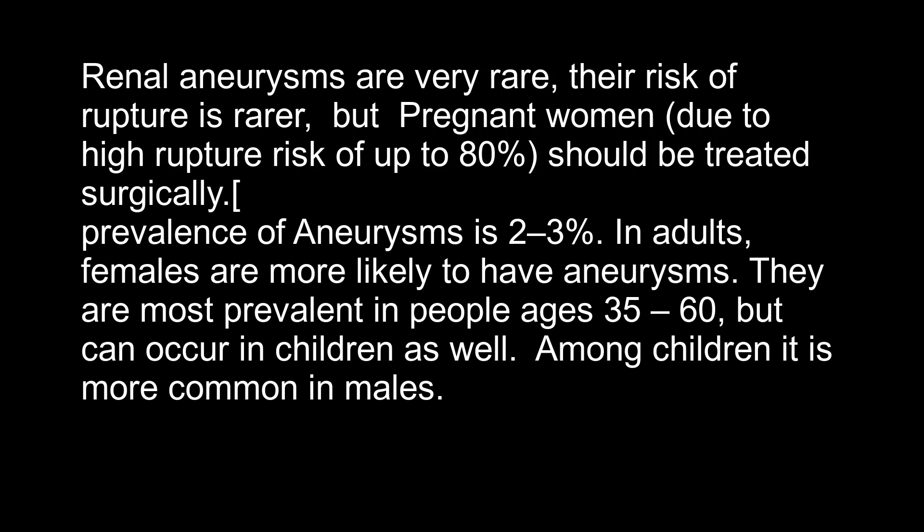The prevalence of aneurysm is two to three percent in adults. Females are more likely to have aneurysms, and they are most prevalent in people ages 35 to 60, though they can occur at any age. Among children, aneurysms are more common in males than females.